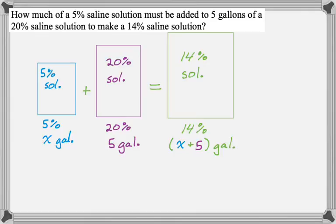Now I need to pull an equation out of this scenario. If I take 5% multiplied by x, so that's 5 over 100 times x, and I add to that 20 over 100 times 5, so that's 20% of 5, I need that to equal 14%, so 14 over 100, of x plus 5 gallons. That's my equation.